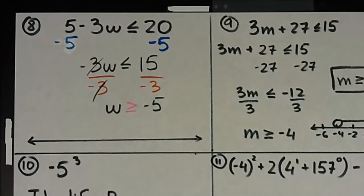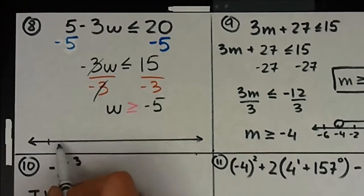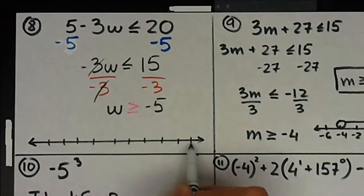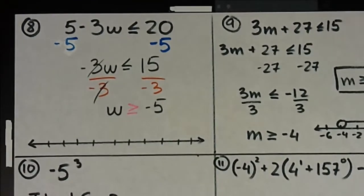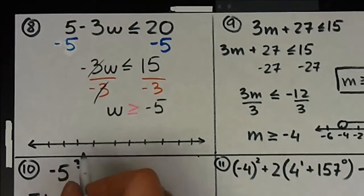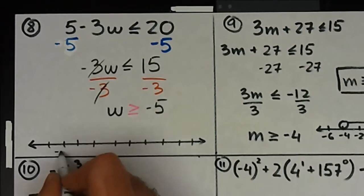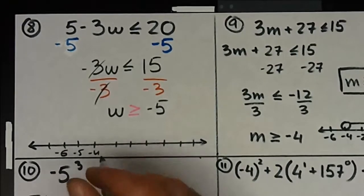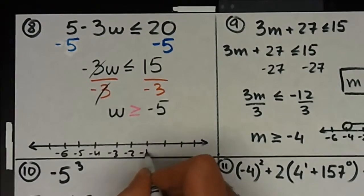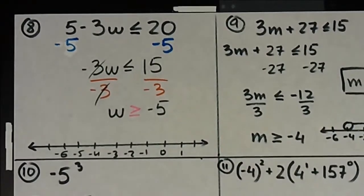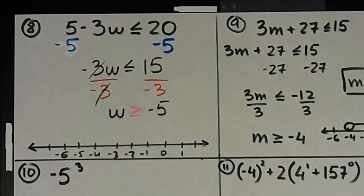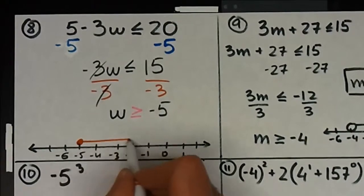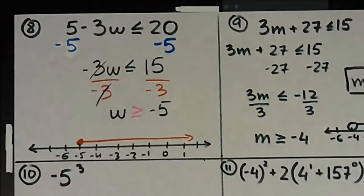Now it's time to graph it. Open circle or closed circle? Closed circle, because it's also equal to negative 5. Which direction? Heading right. So it's a closed circle starting at negative 5 heading right. Questions on eight?